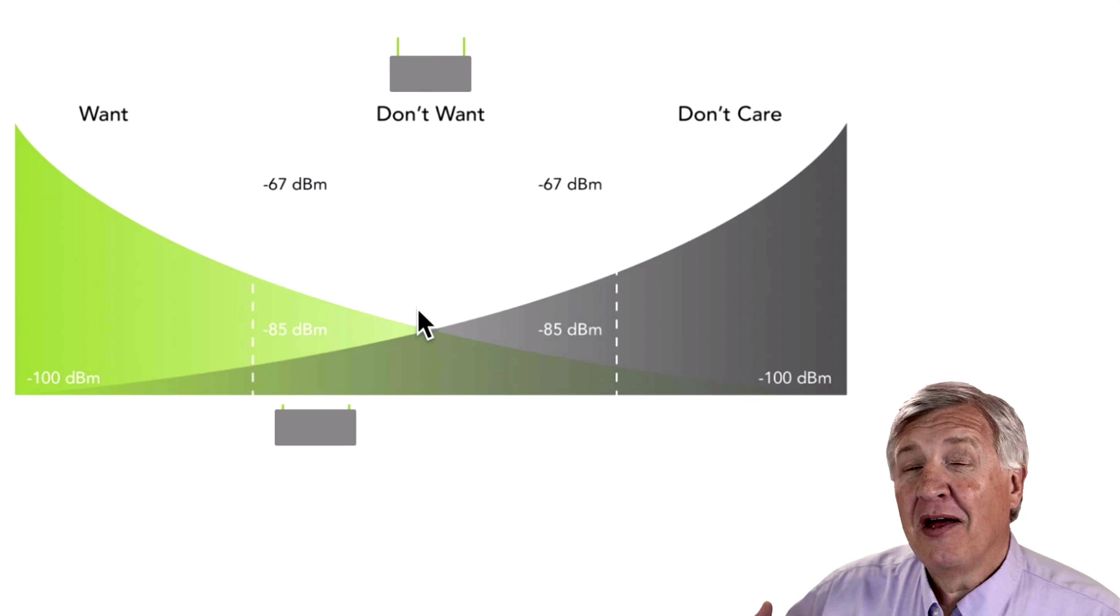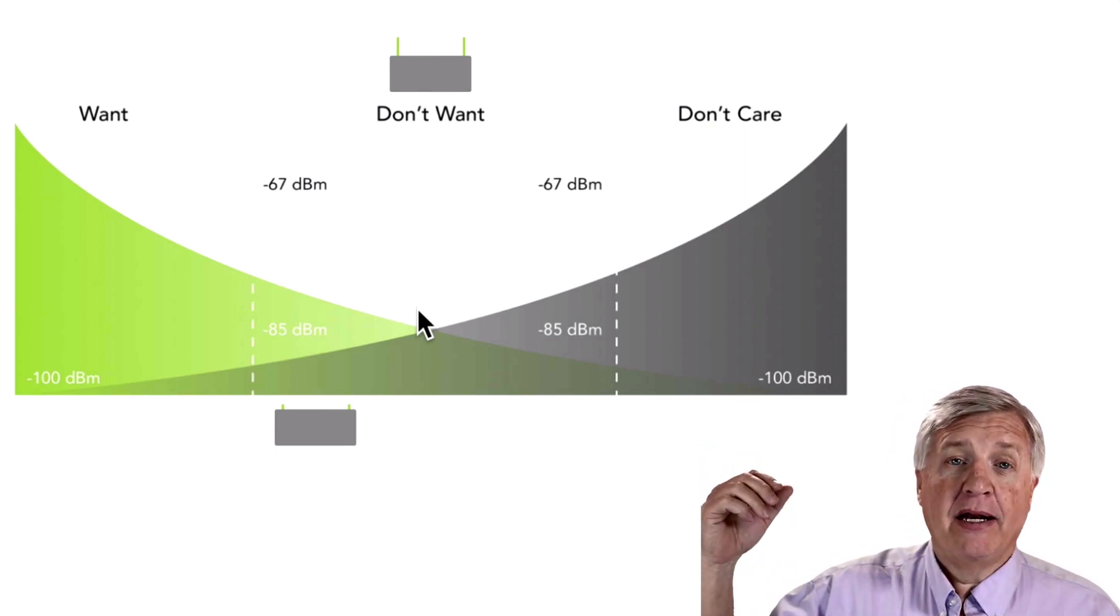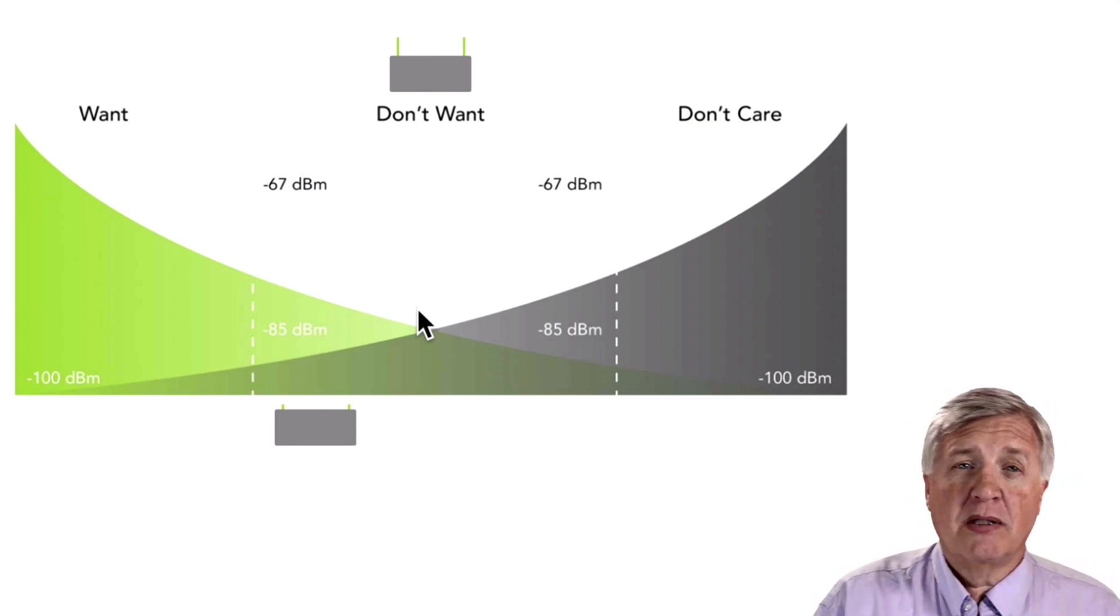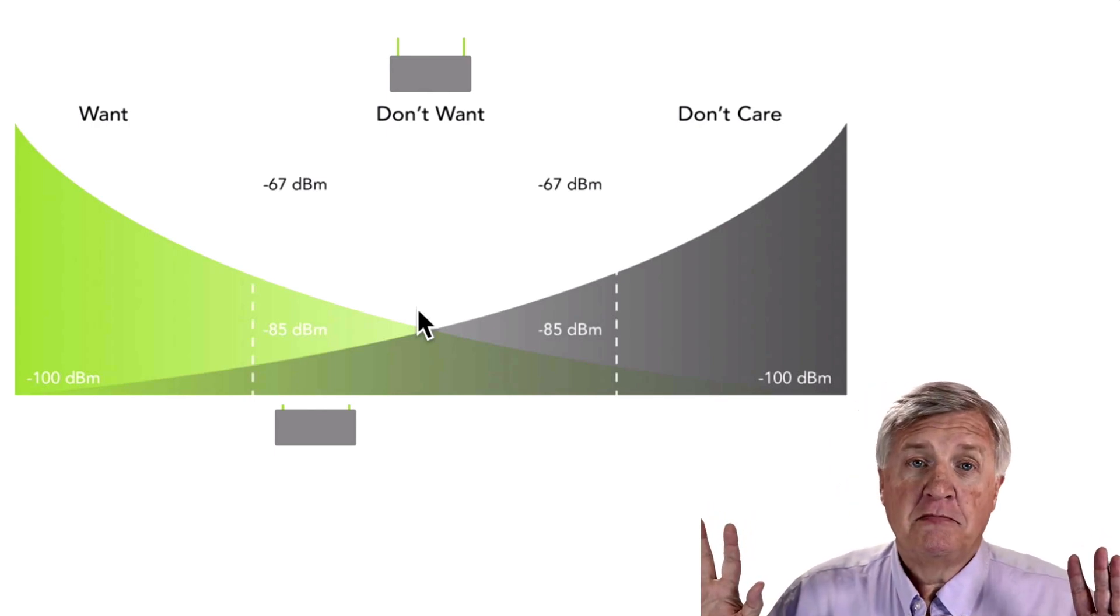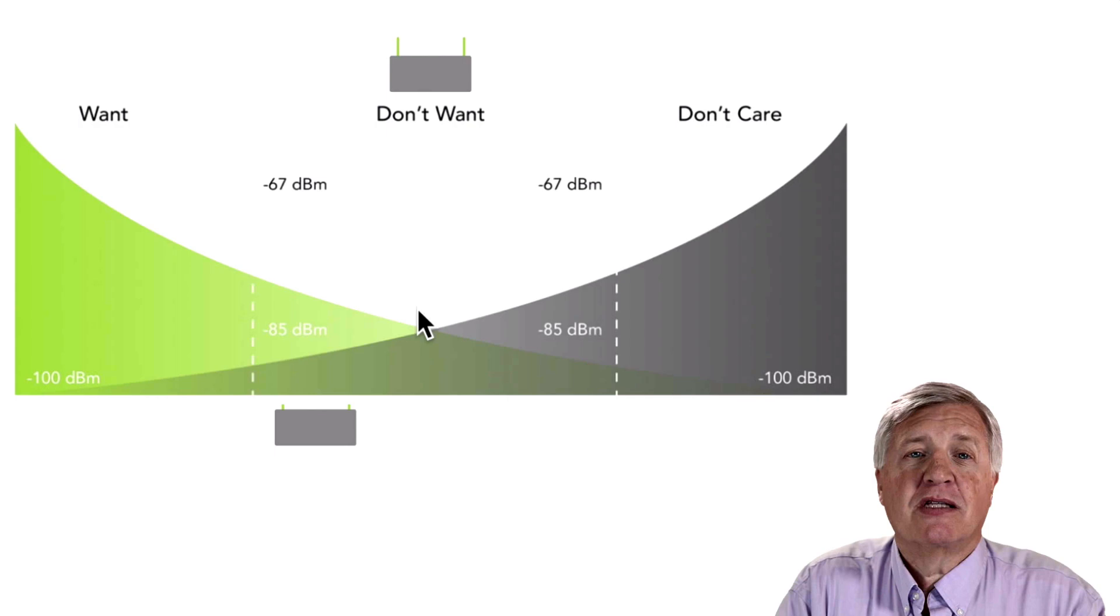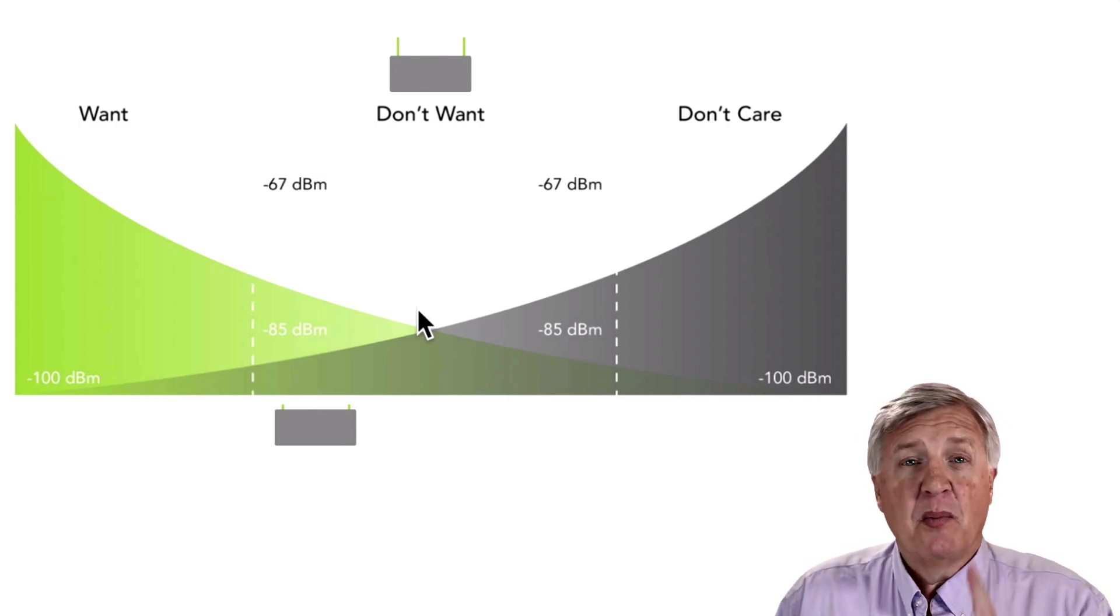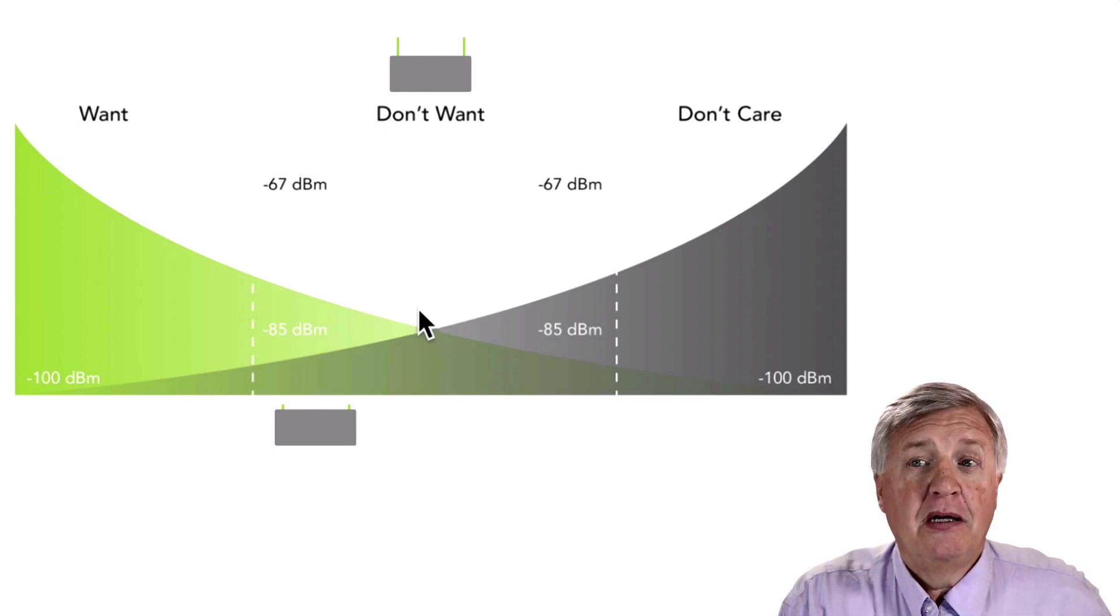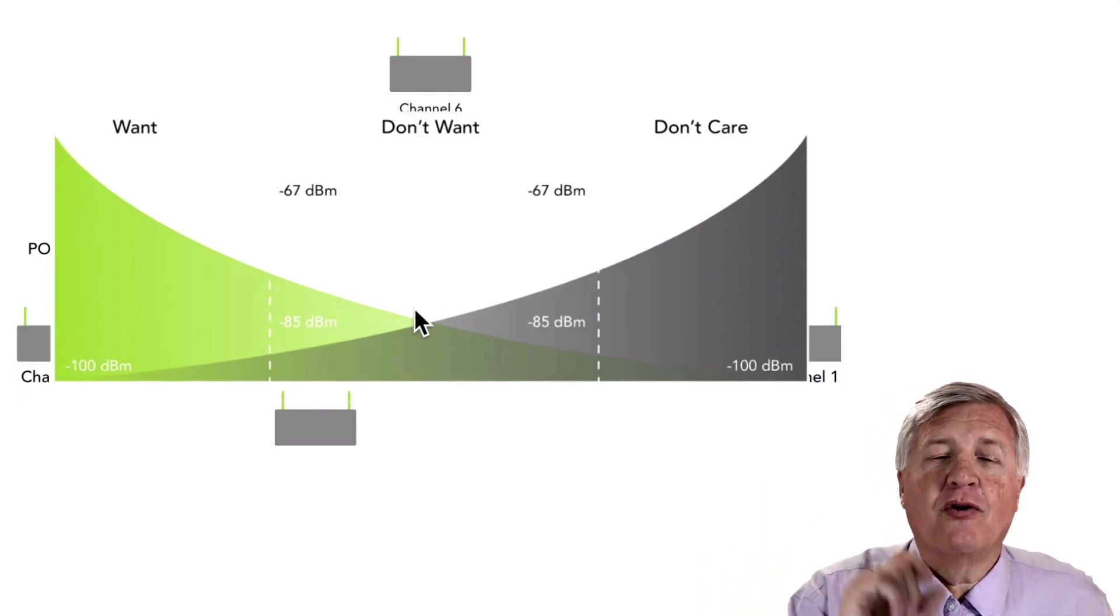And in the frame that it transmits, it says, hello, Mr. Green AP. And it says the MAC address, the BSSID of the AP wants to talk to. The gray AP hears that and goes, not for me. And he waits just like he's supposed to. That's the protocol. Only one device can ever transmit at a time. Could be a client, could be an AP, but only one at a time. So if this little black arrow right here is transmitting, the gray AP can't transmit. Nor can any of the clients associated to his AP because the AP is stopped and he's listening to the green client.